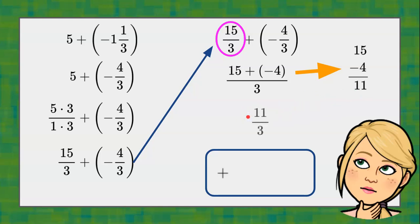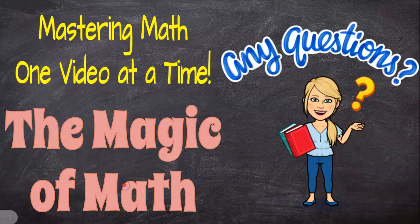So that's my numerator over my denominator, and if it were me I would leave it like that, or you can answer 3 and 2 thirds. Thanks for joining me today at the magic of math. Have a great day!